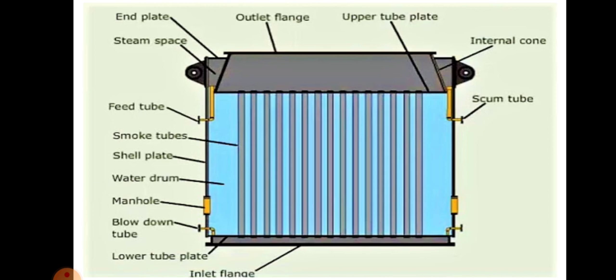Here we can see the components: entry plate, steam space, outlet flange, upper tube end roll, internal column, scum, feed tube, smoke tubes, shell plate, water drum, manhole, blow down tube, lower tube plate, inlet flange and all.